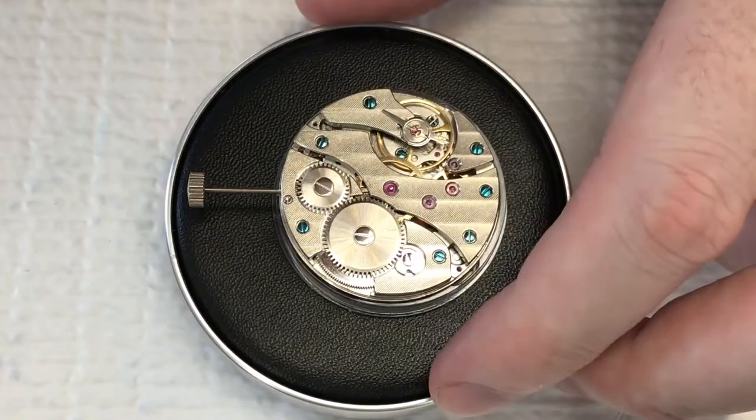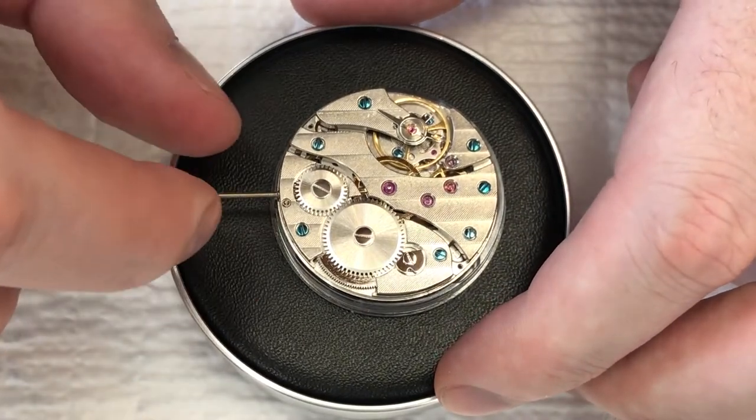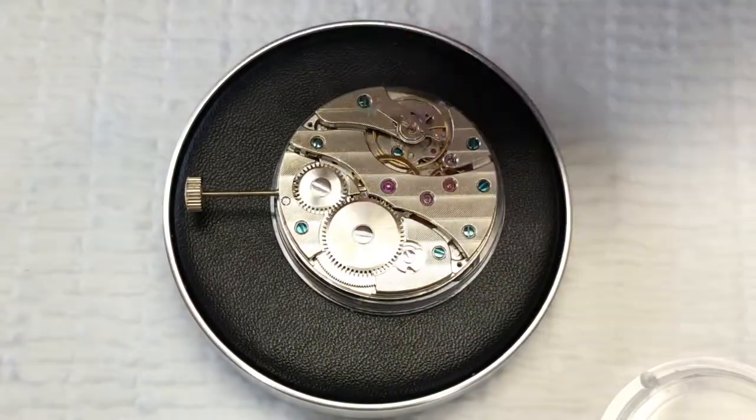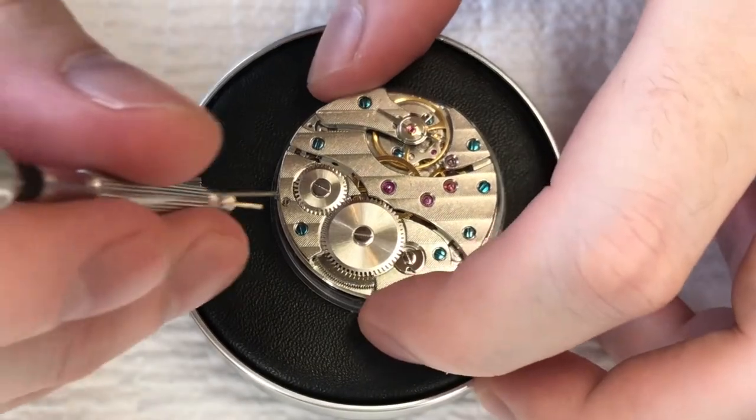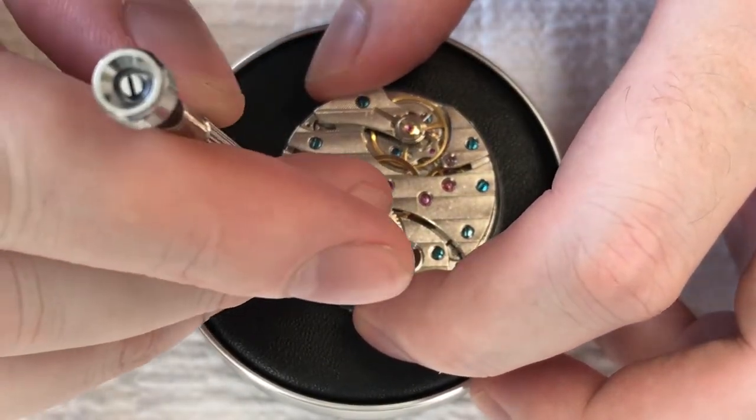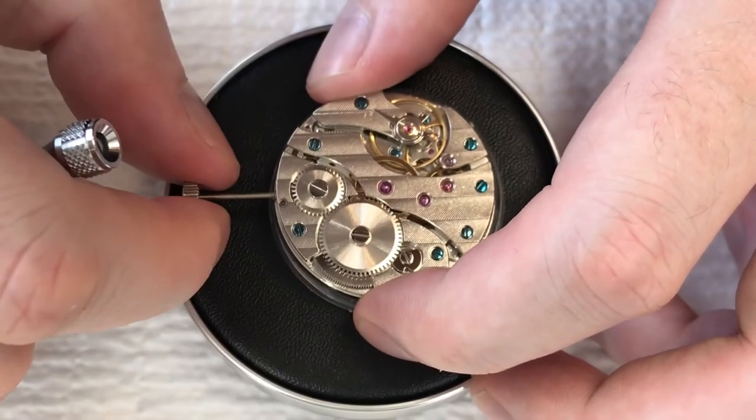So just something to double check before you remove a stem is, what position should it be in? For most movements, you're going to want it in the time setting, which is all the way out. And then in this case, all I have to do is unscrew one little screw a few turns and the stem will just pull right out. So I did a half turn and three quarters.